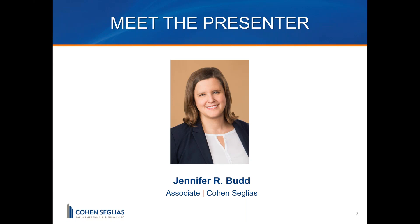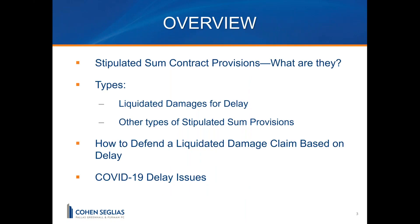As we go today, if you have any questions, we definitely want to address them. Just type them into the questions box and I'll probably do them at the end. I'll try to catch them as I go, but if I don't, I'll certainly circle back at the end. Today I'll cover stipulated sum contract provisions — what they are — and some types. The most common in the construction industry is liquidated damages for delay when a project finishes late, but there are other types. We'll also talk about how to defend an LD claim based on delay, and some specific delay issues that have arisen in light of the current pandemic.